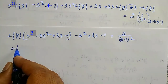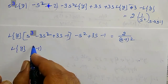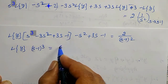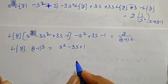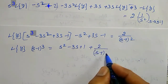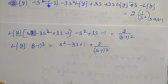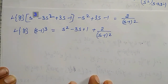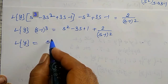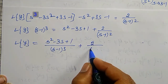Simplifying, the bracket s³ − 3s² + 3s − 1 is the perfect cube (s−1)³. So L{y}·(s−1)³ equals (s² − 3s + 1) plus 2/(s−1)², giving L{y} = (s² − 3s + 1)/(s−1)³ + 2/(s−1)^5.